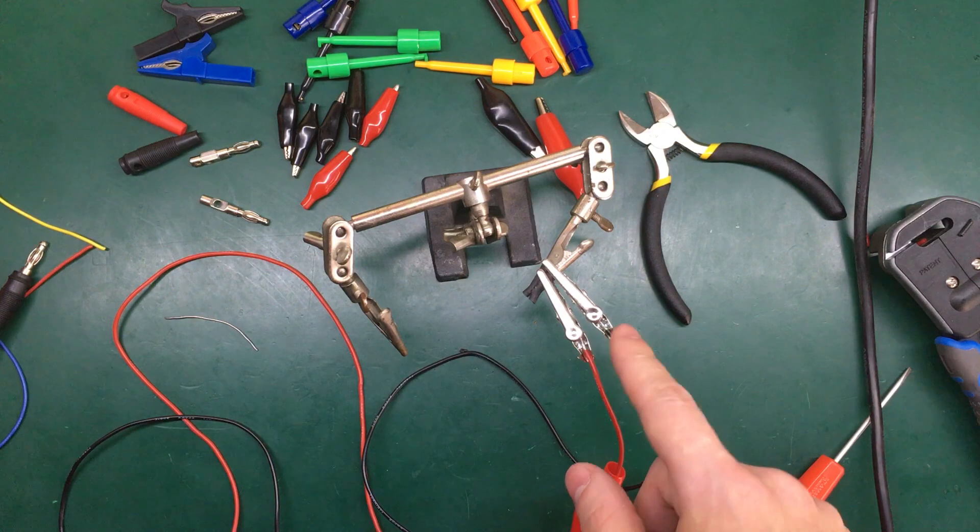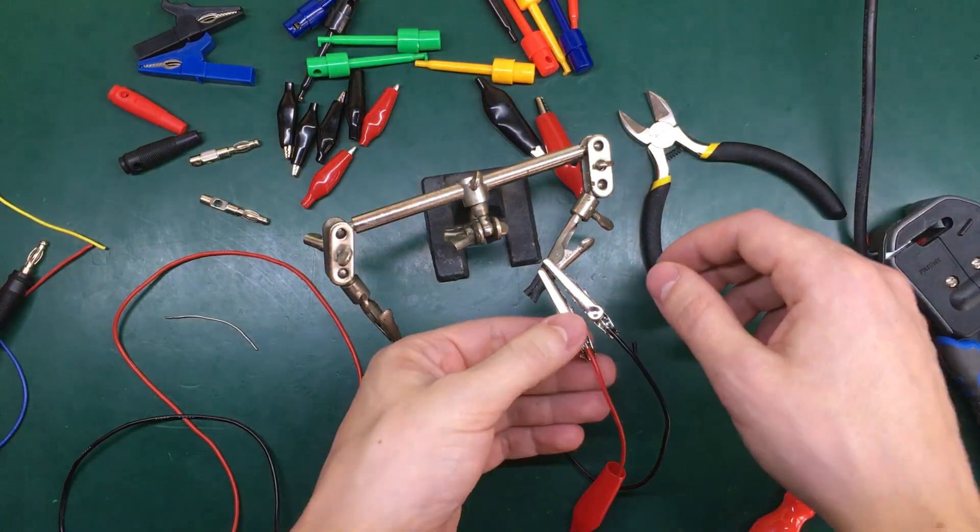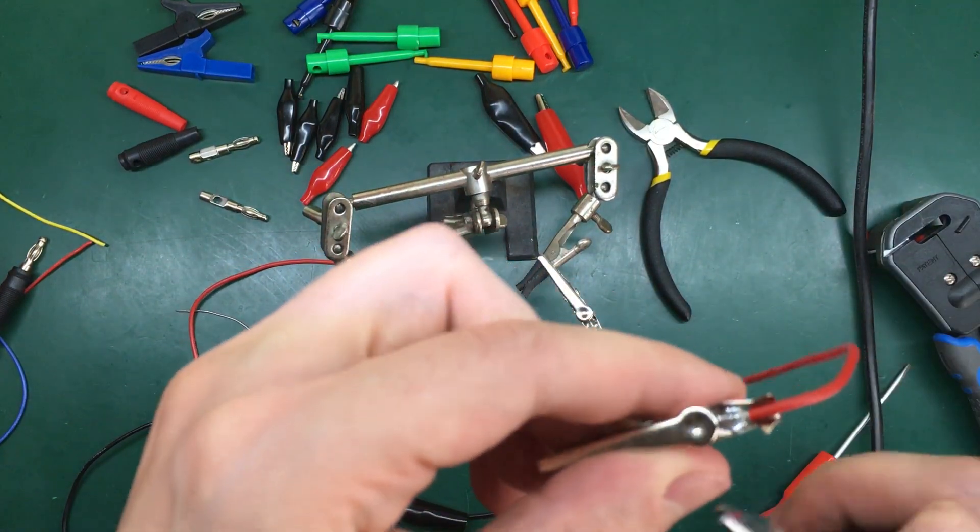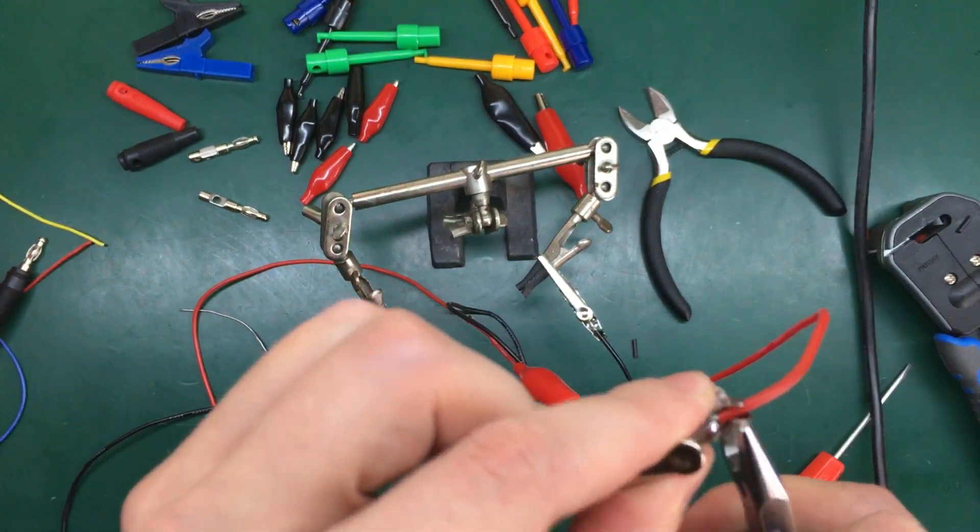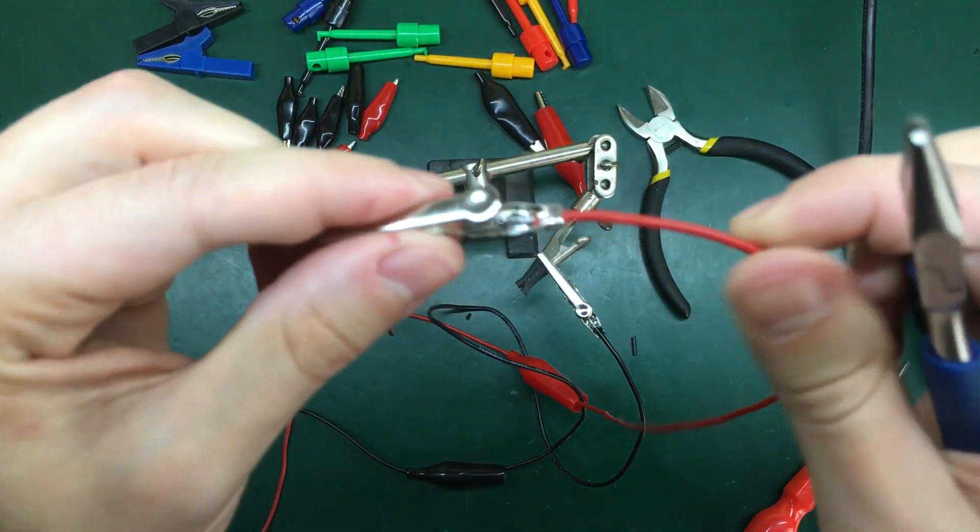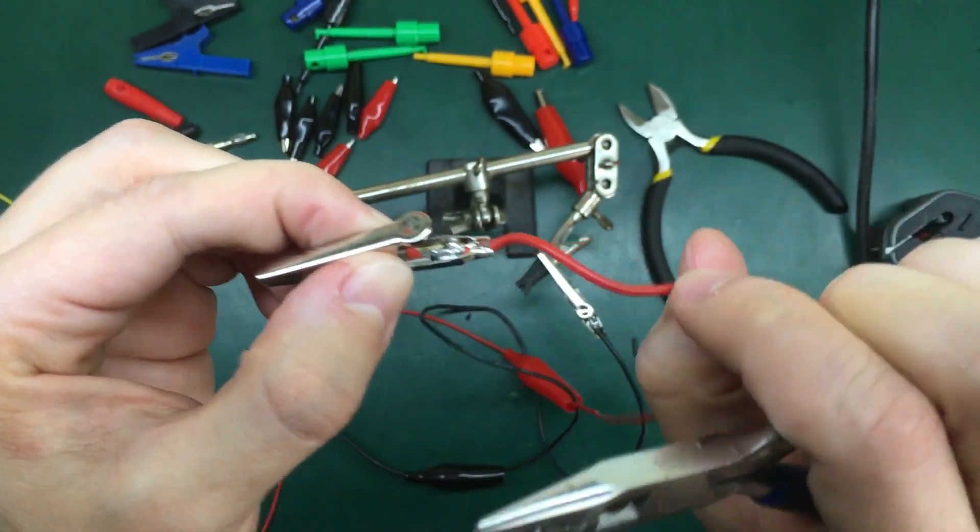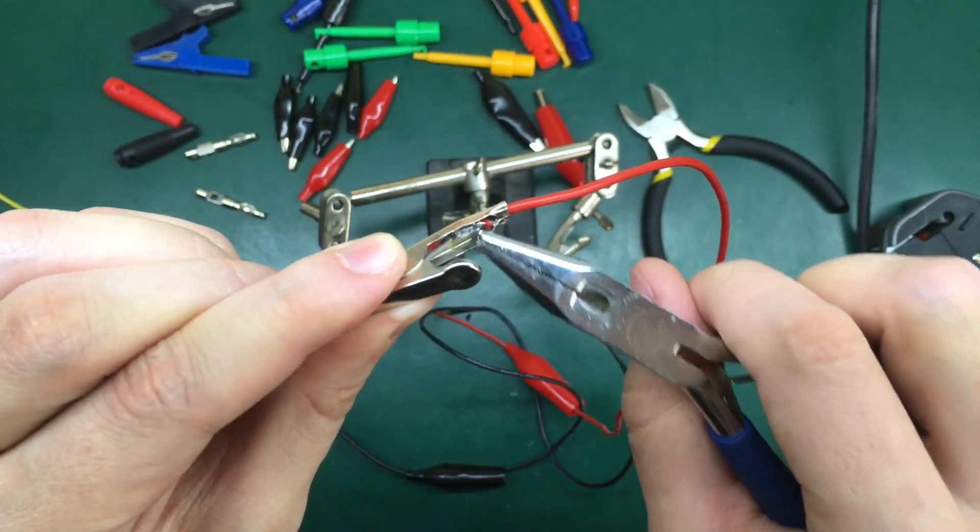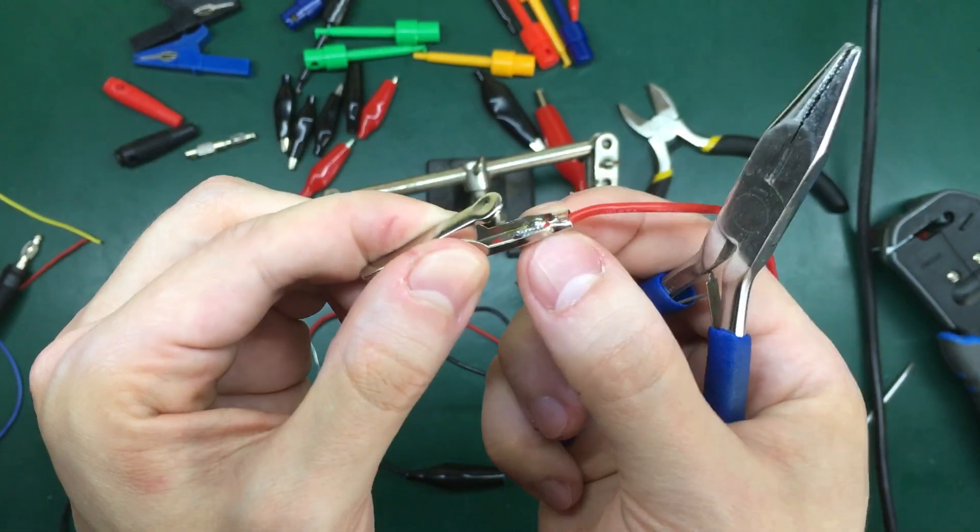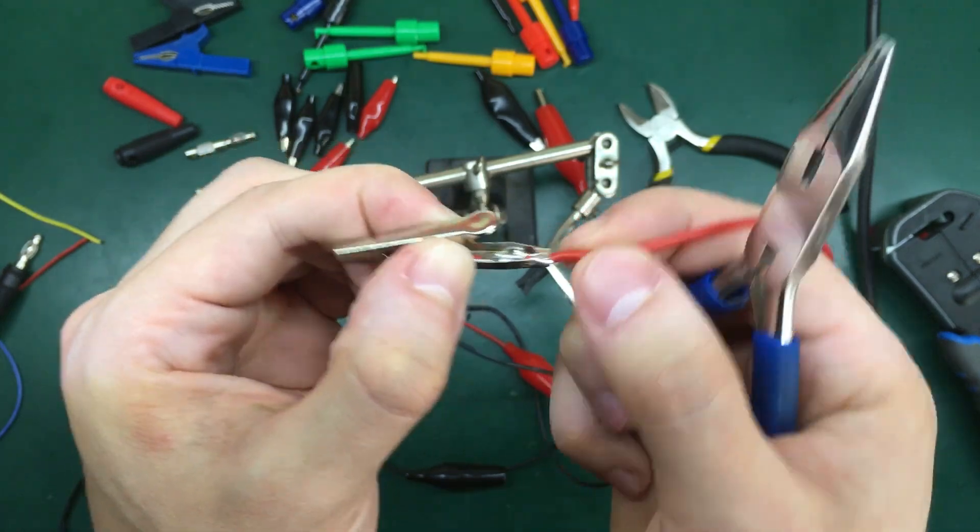Next step is to crimp these metal ends to ensure good mechanical connection. This way it doesn't matter if you put stress on the actual cable, it will not pull on the electrical connection. Because these metal retaining clips will ensure mechanical stability.